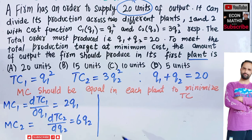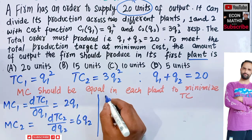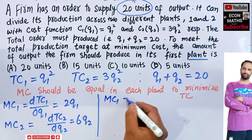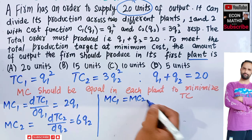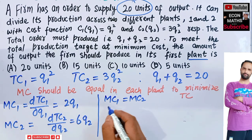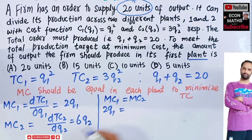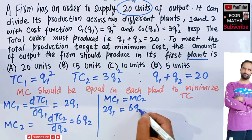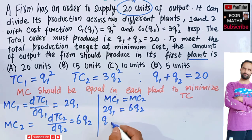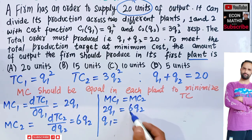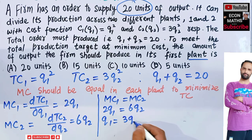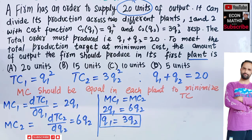We equate the marginal costs in the two plants: marginal cost in Plant 1 should equal marginal cost in Plant 2. So 2Q1 equals 6Q2, which gives us Q1 equal to 3Q2, since 6 divided by 2 is 3.